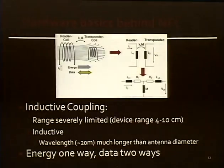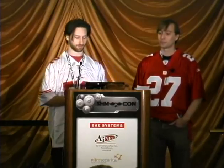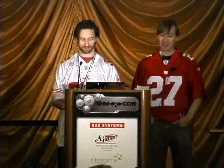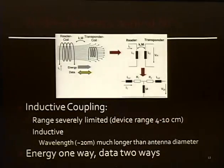Some of the hardware basics behind NFC: it's inductive coupling, so that's why the tag looks like a coil rather than a typical antenna. It's a near-field technology, which means the range is severely limited. The stated range — and we'll emphasize stated — is 4 to 10 centimeters. The wavelength is about 20 meters for the 13.56 megahertz wave, much longer than the antenna diameter, which makes it near-field. The important thing is that there's one device providing the power, typically your phone. Energy goes one way, and data comes both ways.